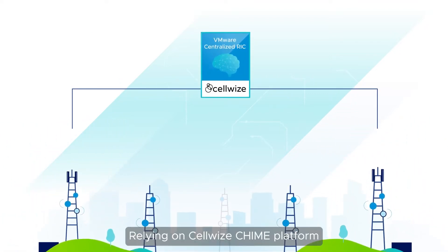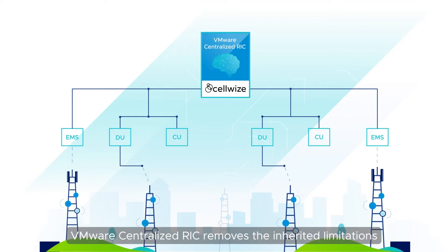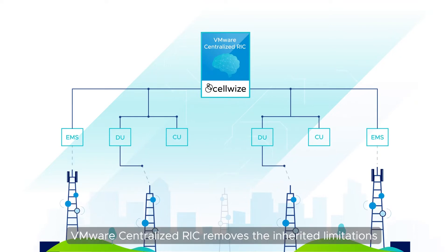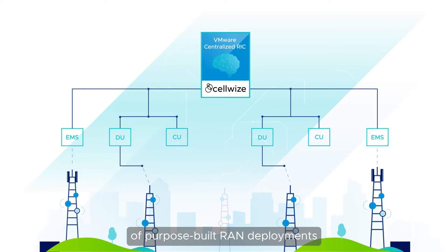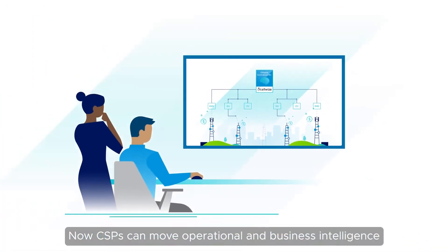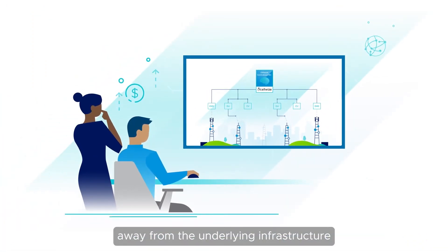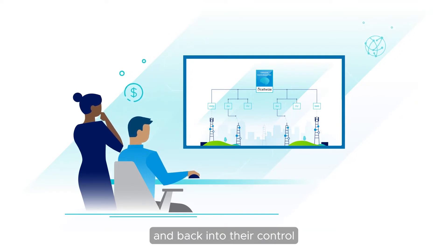Relying on CellWise's QIIME platform for RAN data mediation and AI services, VMware's Centralized RIC removes the inherited limitations of purpose-built RAN deployments, finally unlocking modernization and monetization of the RAN. Now CSPs can move operational and business intelligence away from the underlying infrastructure and back into their control.